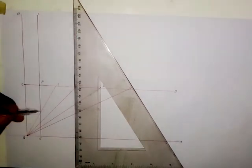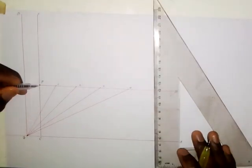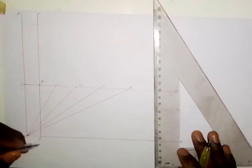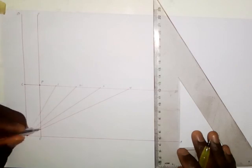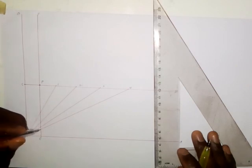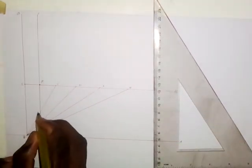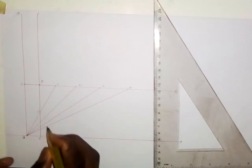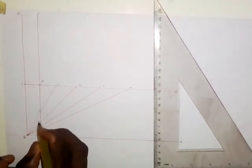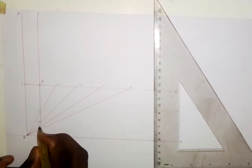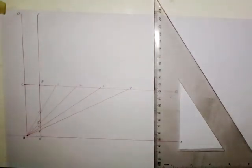With your set square, note where each of these lines from O touches line EF. The line through point 1 touches EF at a certain point — I'll call it 1 prime. Similarly, we get 2 prime, 3 prime, and 4 prime on line EF.